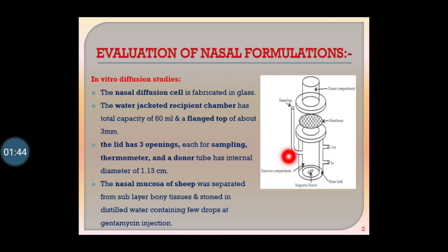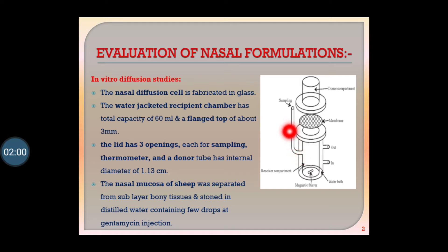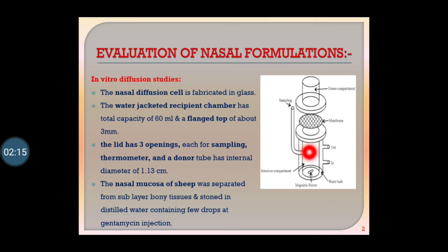As shown in the diagram, the lid has three openings. Different modifications can be made in diffusion cell fabrications. Generally, one opening is for sampling, one for the donor compartment, and one for the thermometer to check and maintain temperature.